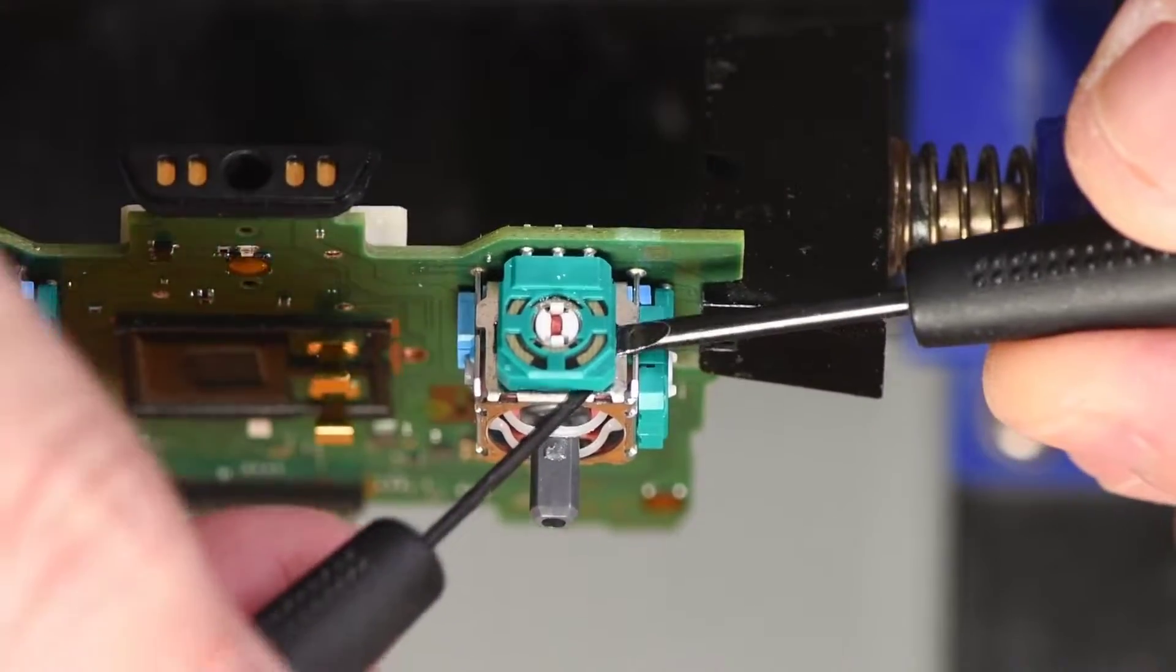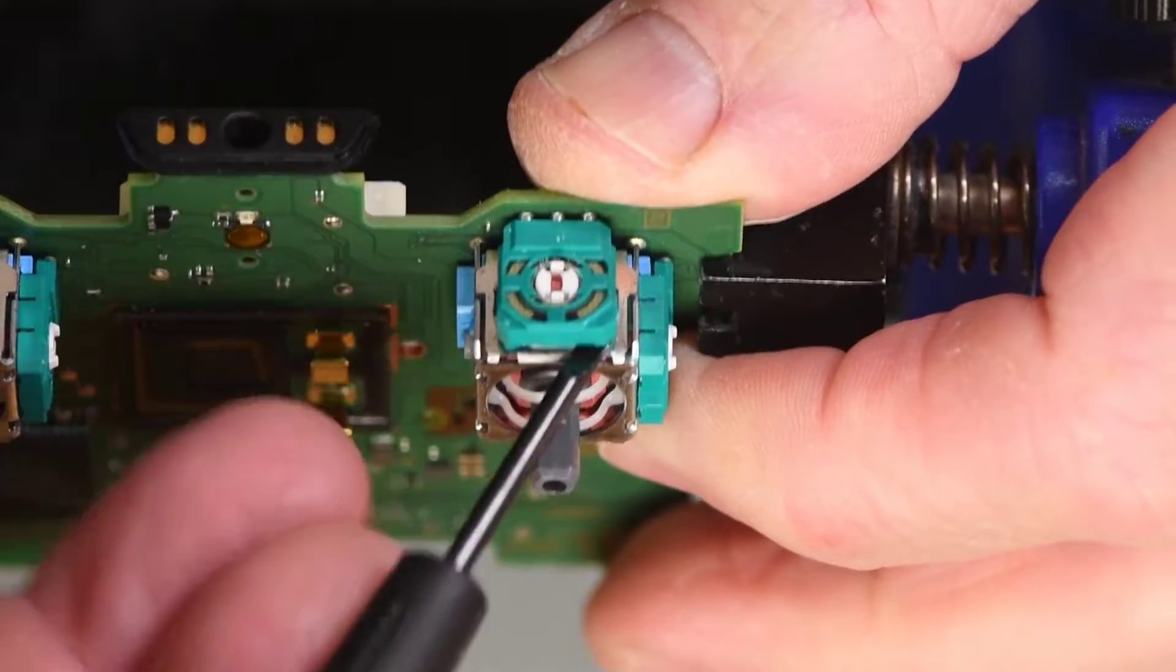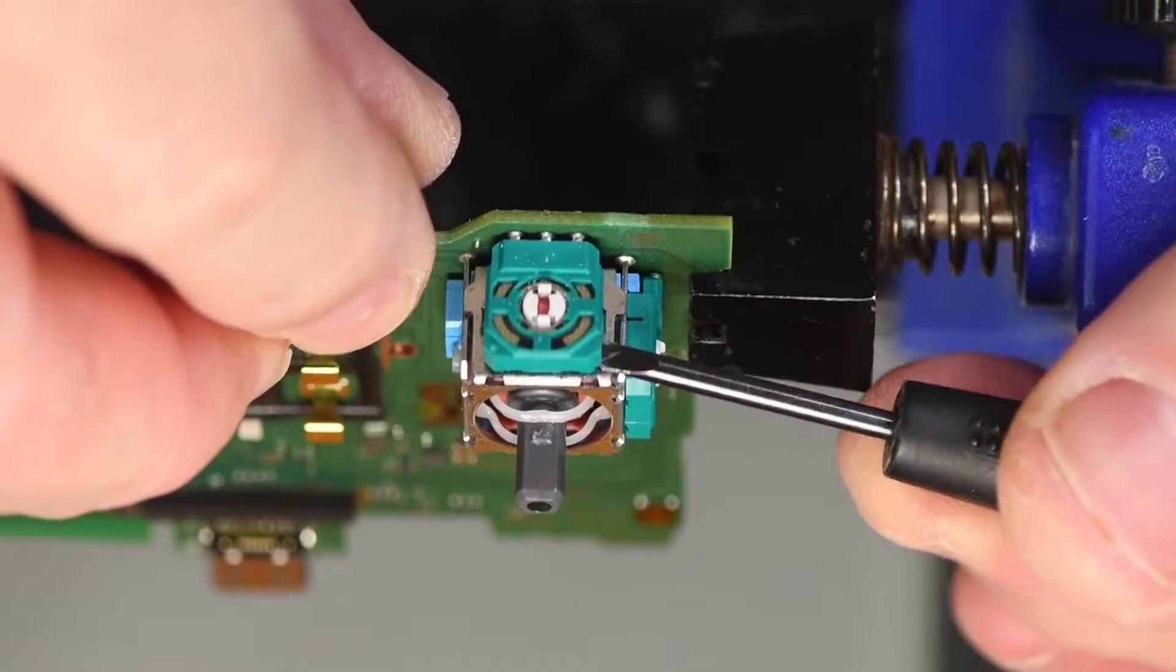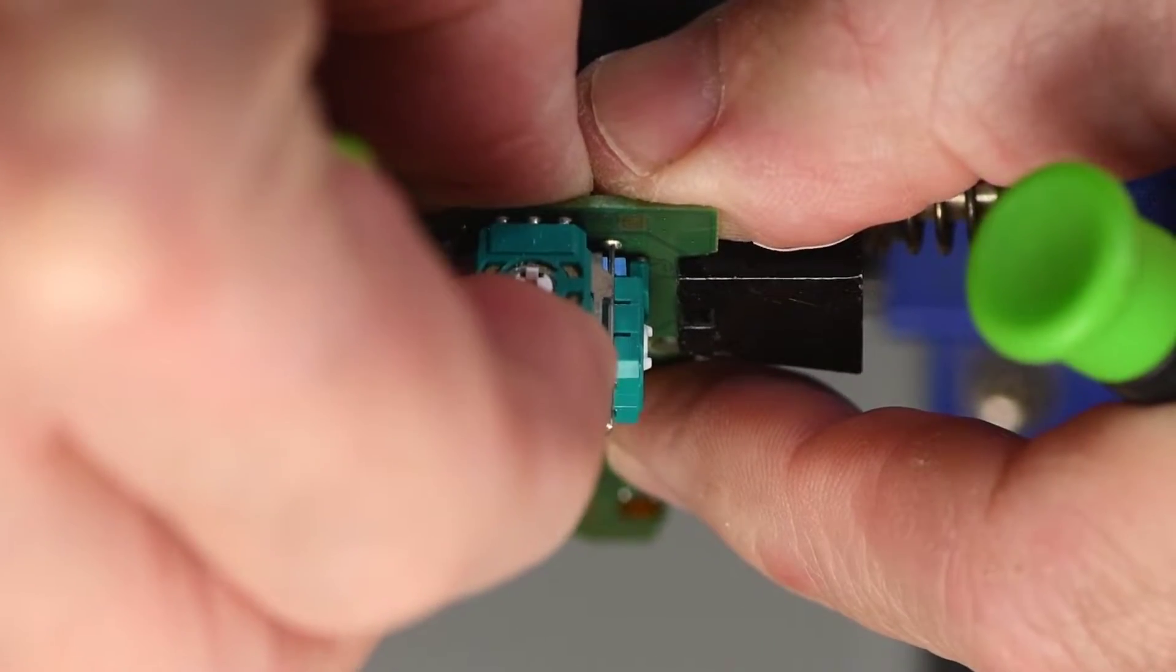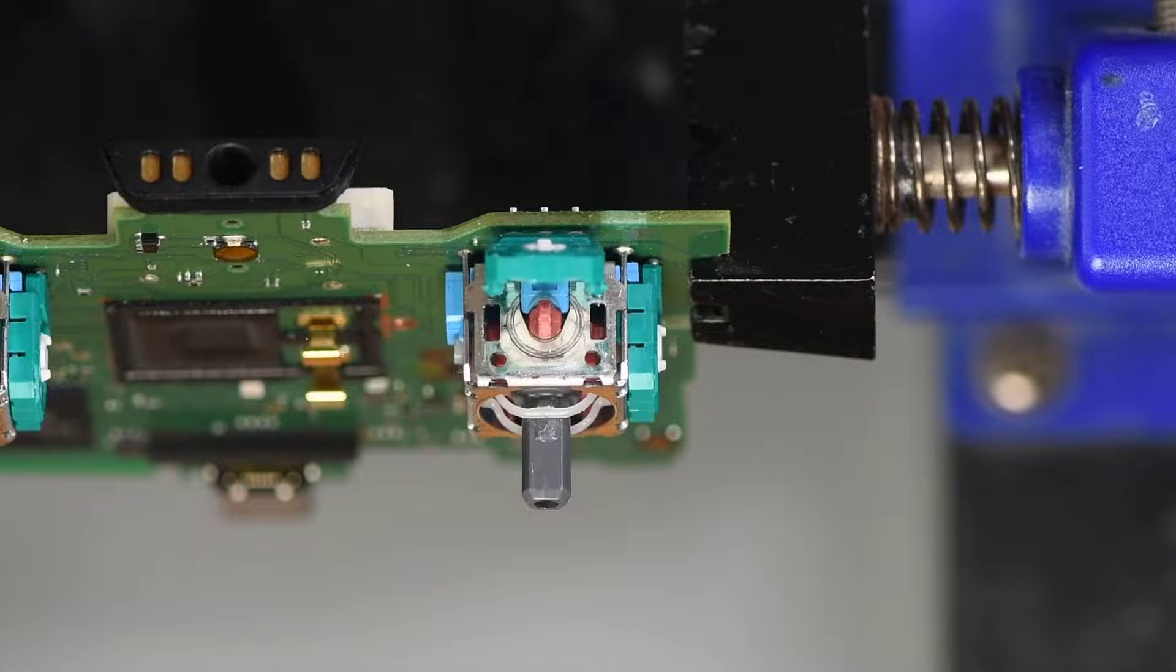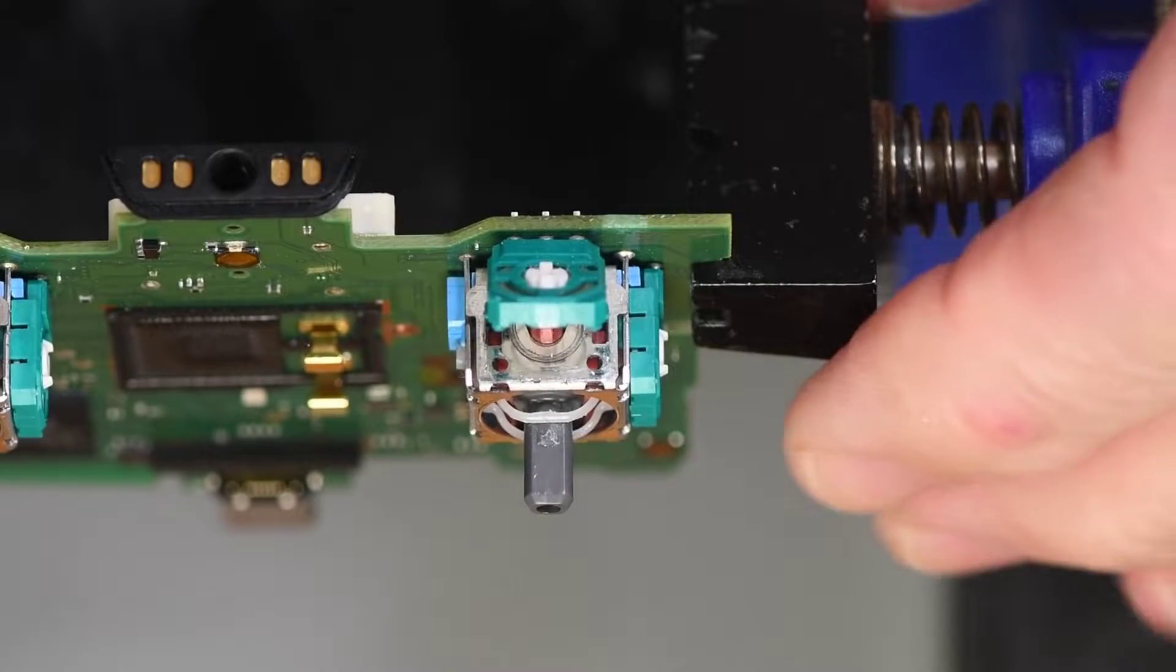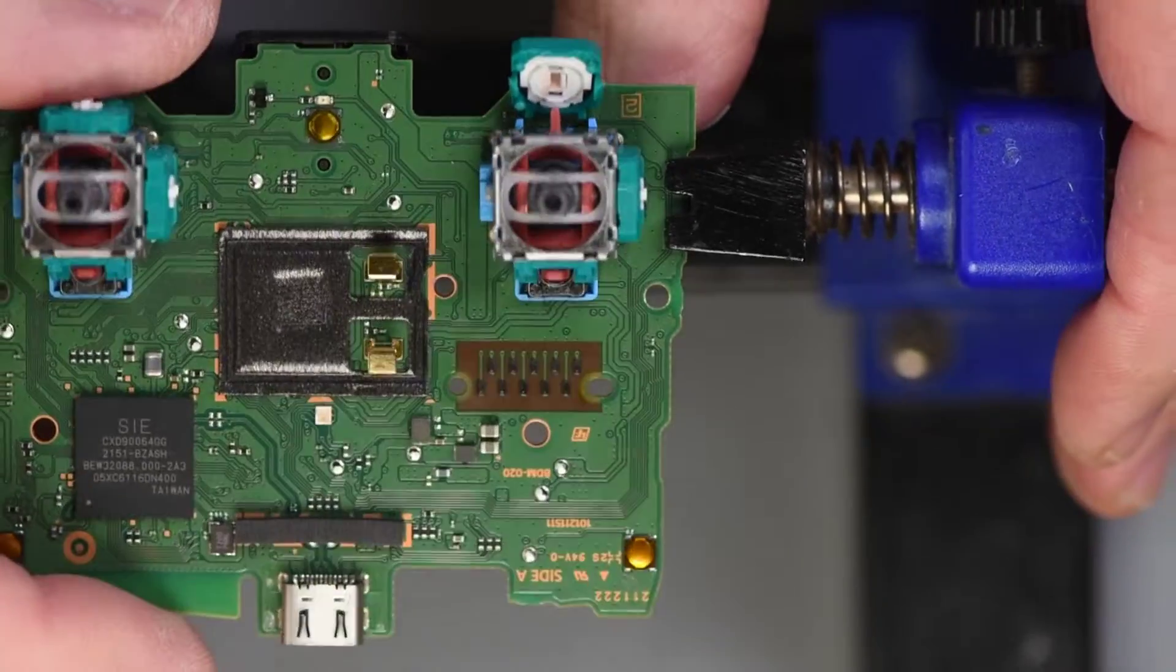Pressing in on the tab will make it easier to pry the potentiometer away from the module, though the leads are pretty stiff so it doesn't move that freely. Takes a bit of pressure to bend it away. When prying it off, you want to make sure you don't damage the plastic shaft that is sticking out of the joystick module here. If it's damaged, then the entire module will have to be replaced. Once the potentiometer is separated from the module, it can then be unsoldered.